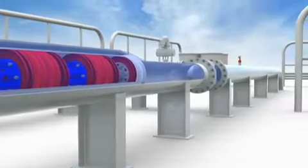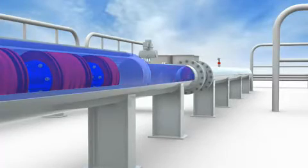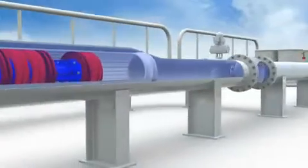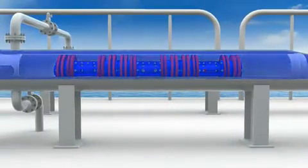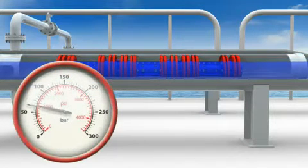The pig trap isolation valve opens, and the kicker line valve re-opens. The first pig is now launched, and the pig signaler trips as it passes. The pig trap isolation valve and kicker line valve close, and the launcher is then depressurized, drained, vented and purged, ready for the next launch sequence.